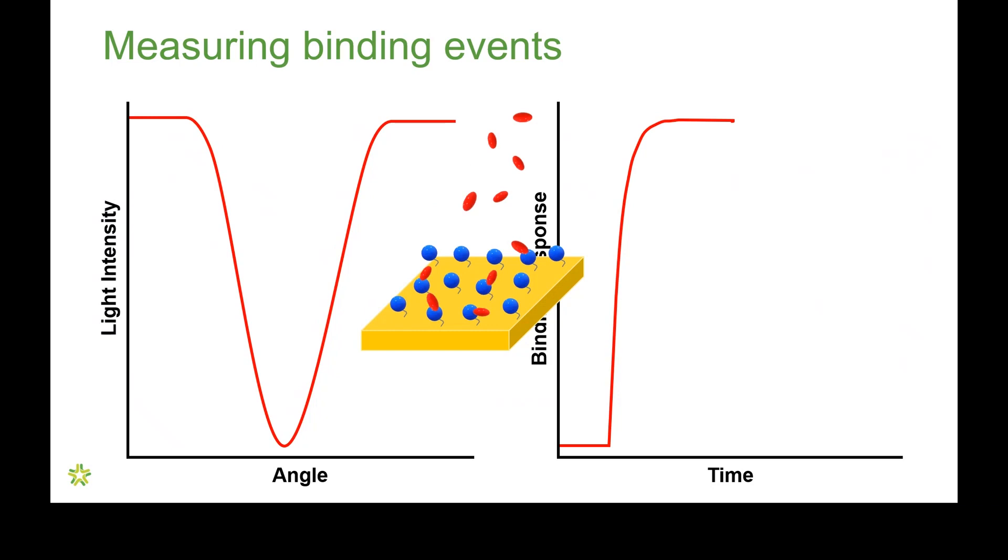Now, at this point in the interaction, we've reached a plateau in the binding response, and the angle is not changing at all in its position. At this stage of the experiment, the interaction is at equilibrium. The same number of analytes are binding to the surface as are dissociating from the surface, and that's what generates that plateau.